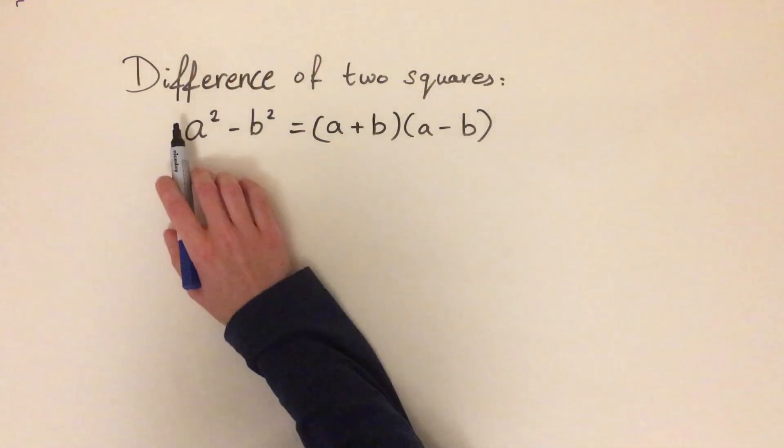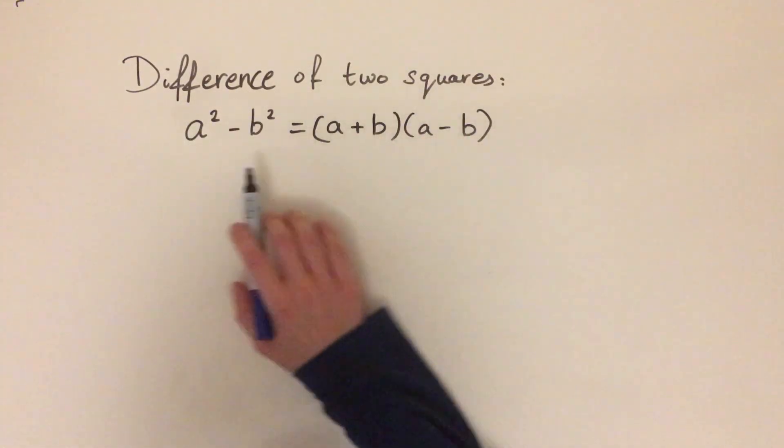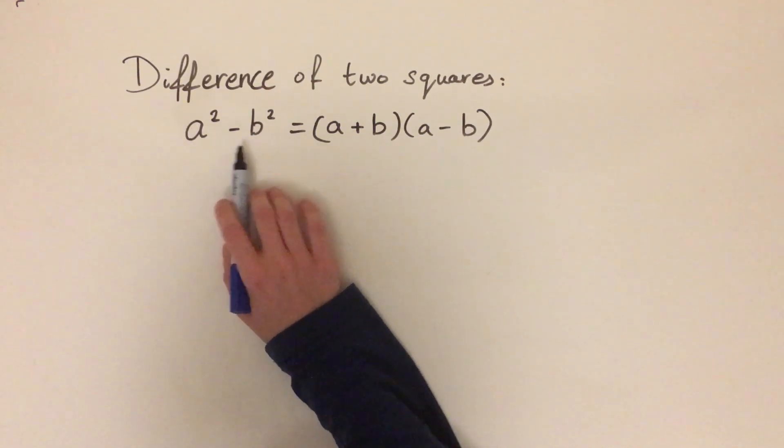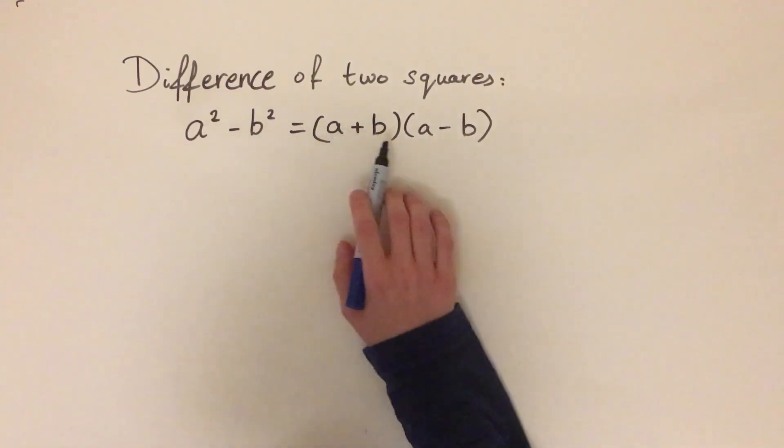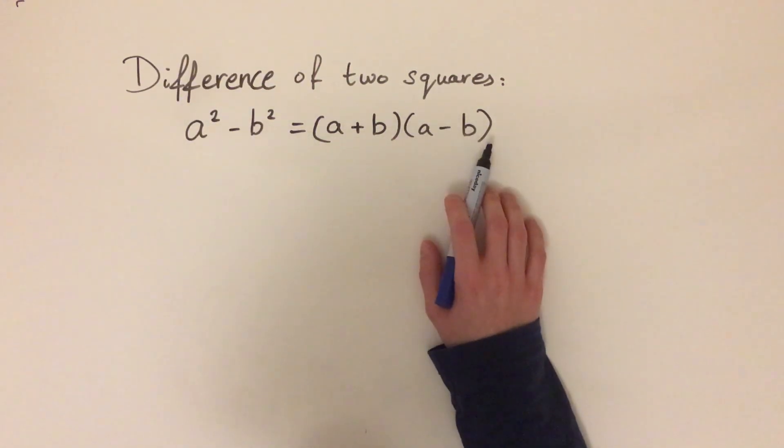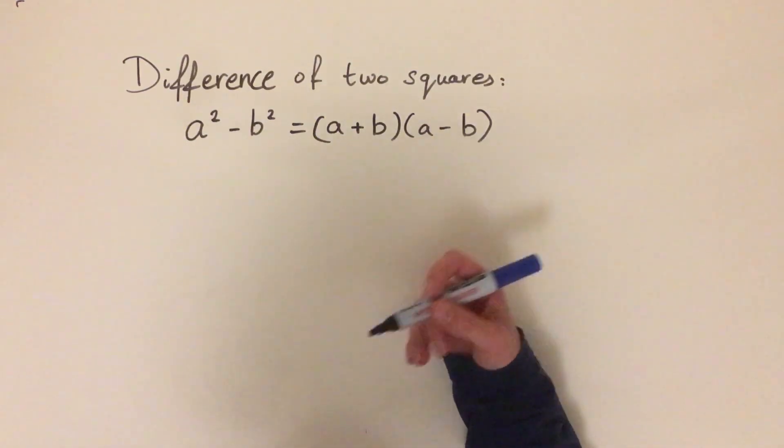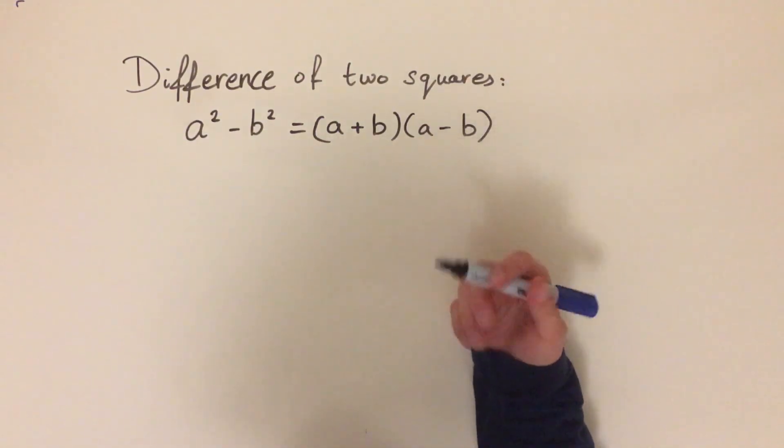Okay, so today we're going to look at the difference of two squares formula. This states that a squared minus b squared equals a plus b times a minus b. And we're going to use this formula to simplify some complicated expressions. It's a really powerful tool.